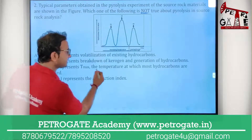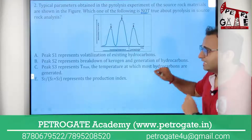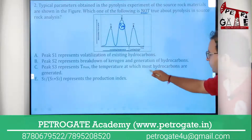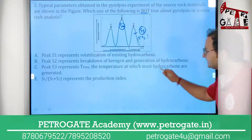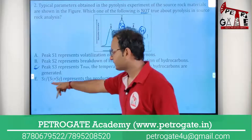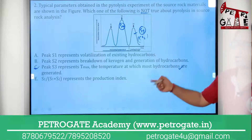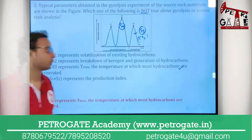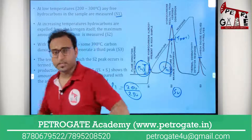Option C says: peak S3 represents T-max, the temperature at which most hydrocarbons are generated. This is WRONG — T-max is associated with the S2 peak, not S3. Also, S3 represents CO2 generation, not most hydrocarbon generation. So option C is the incorrect statement, making it the correct answer. Option D — S1/(S1+S2) represents the Productivity Index — is correct, confirming C is the answer.